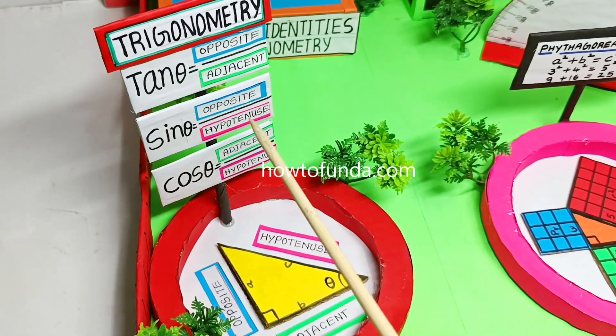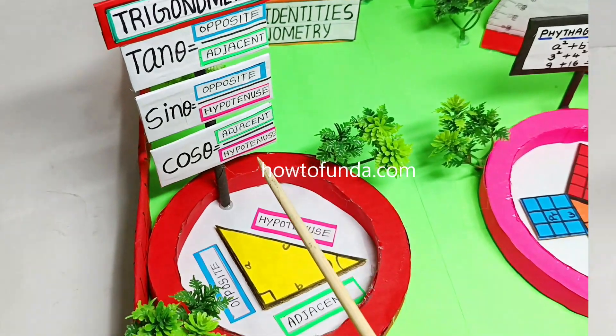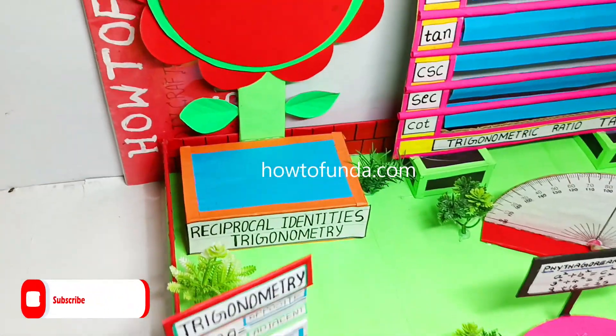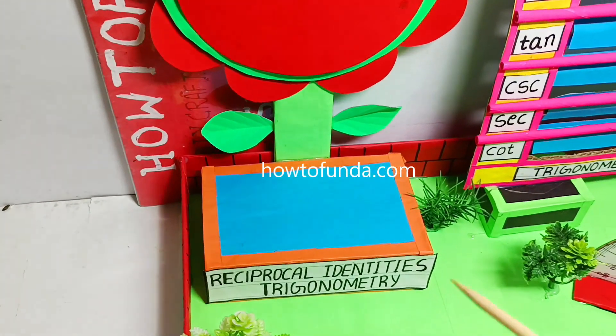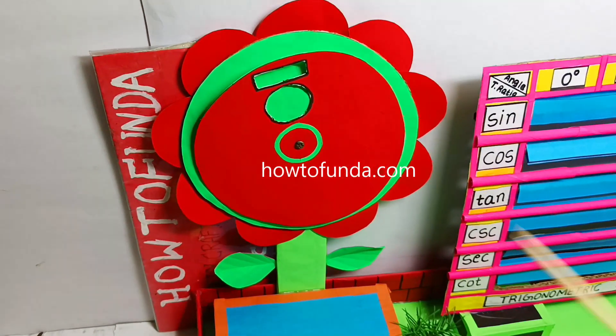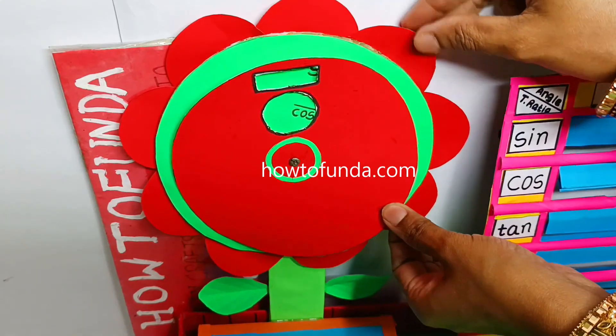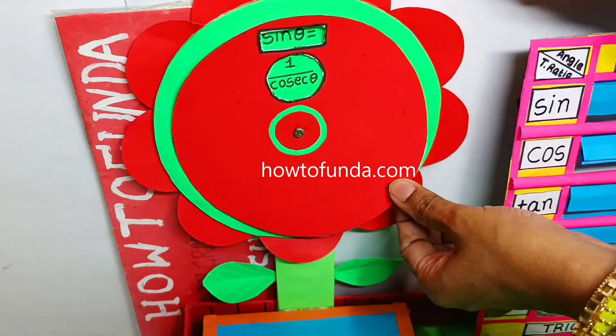Similarly, we have depicted reciprocal identities of trigonometry by making use of this flower concept. If you can see, we have sin θ represented by 1 by cosec θ.